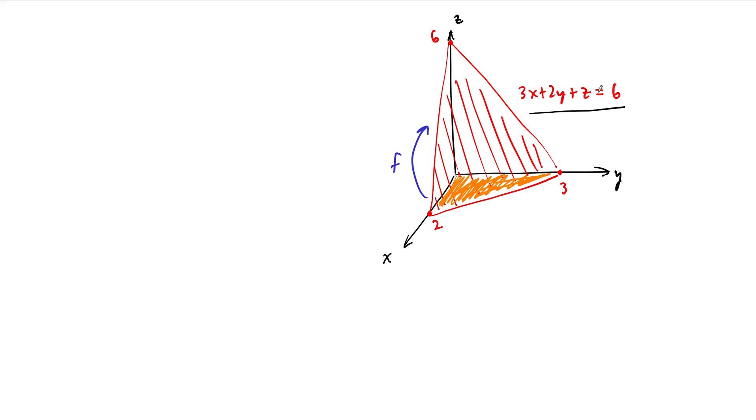So the idea here is that we're going to be able to solve this for z, and that our function is going to be 6 minus 3x minus 2y. So this will be the function that we want to find the surface area of.